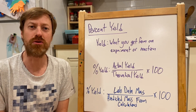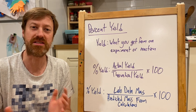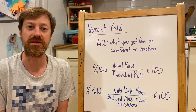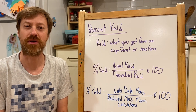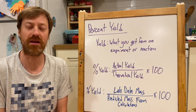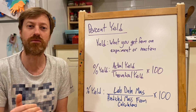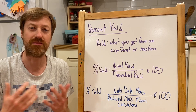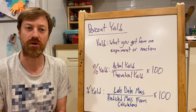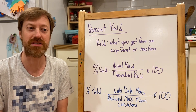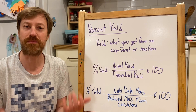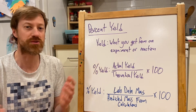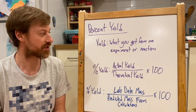One area where you may have heard the term yield before, at least in this context, is in baking recipes. If you're baking cookies, for example, maybe the recipe says yield 12 cookies — that means you expect to get 12 cookies out of doing that baking project. Or if you're making muffins, maybe yield 24 muffins — you expect to get 24 muffins out of that. So yield is what you get from an experiment or reaction.